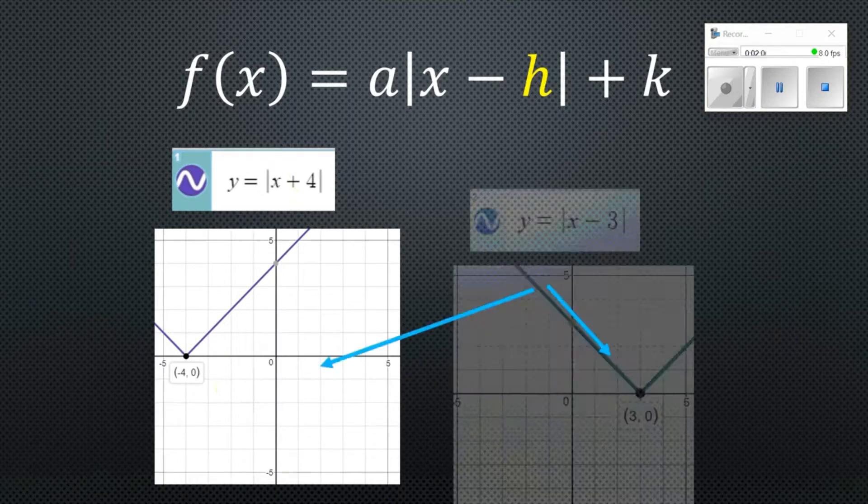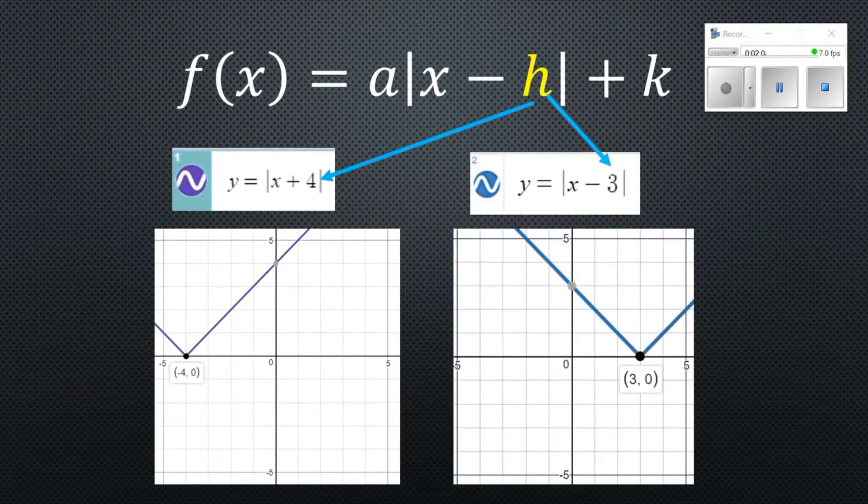I have another example for you here. We're going to move the absolute value equation to the right three units and that would be a minus 3 on the inside. So just remember if you're inside the absolute value symbols, it's going to be opposite of what your intuition is. So a plus 4 will move it left 4 and a minus 3 will move it right 3.